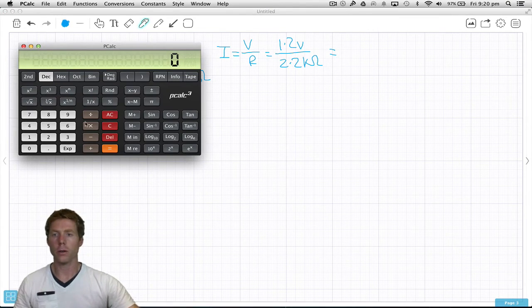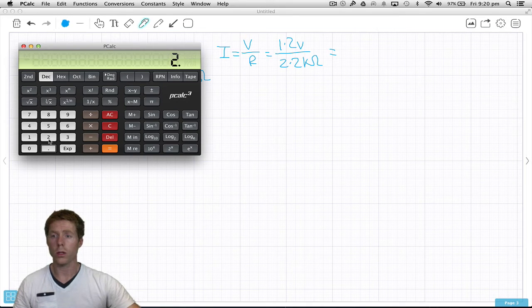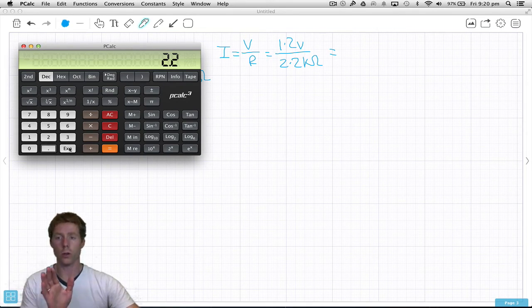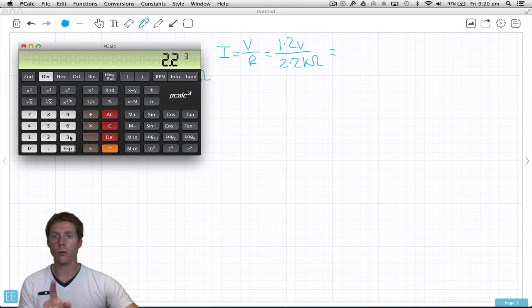Bring up the calculator. We've got 1.2 divided by 2.2, and it's k, so we do the exponential button and 3 to get k.